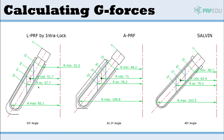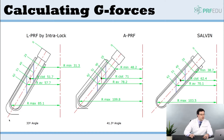We'll compare the Intro Lock versus the A-PRF system. The Intro Lock is a smaller device, so the maximum radius is 85mm. The A-PRF is a larger device with a max radius of 109.8mm, and the Salvin system in the study was 103.5mm. They also have different angulations. When you typically calculate g-forces, it's done at the RCF max.